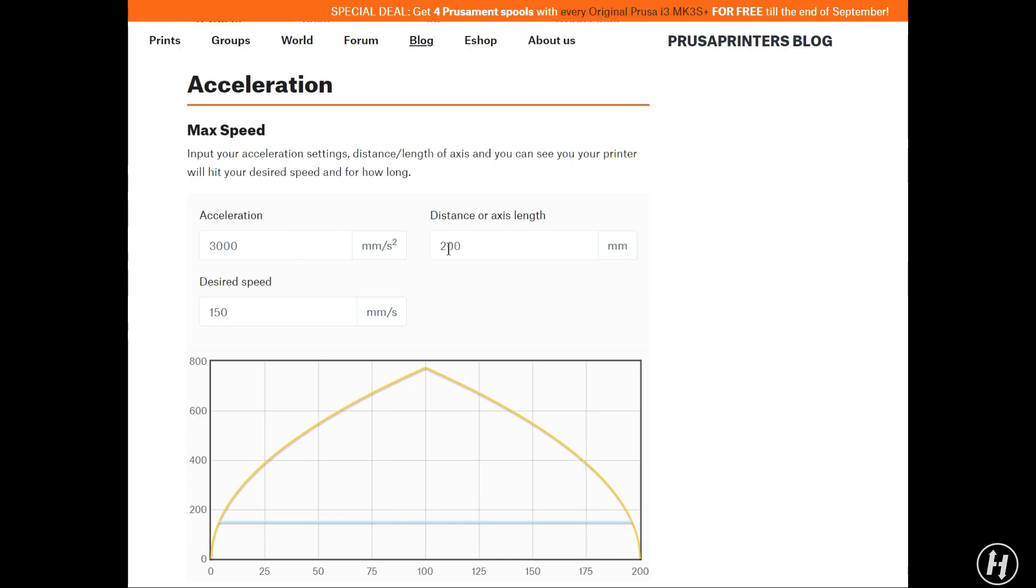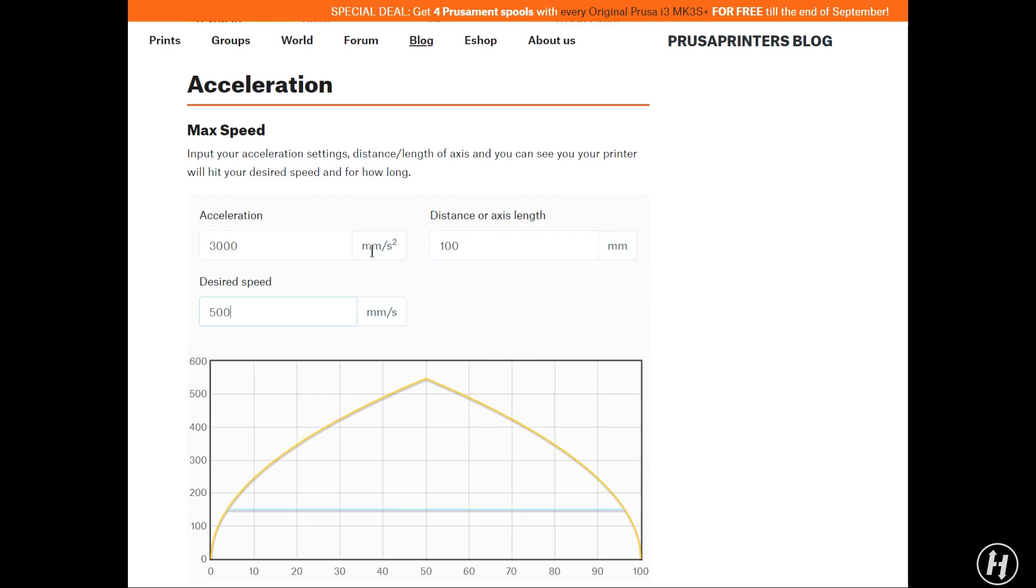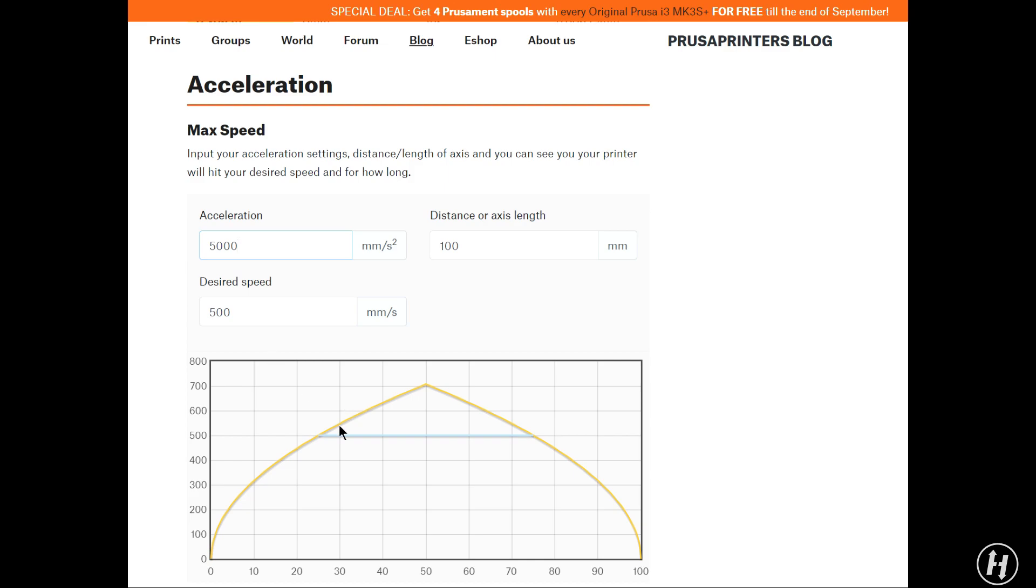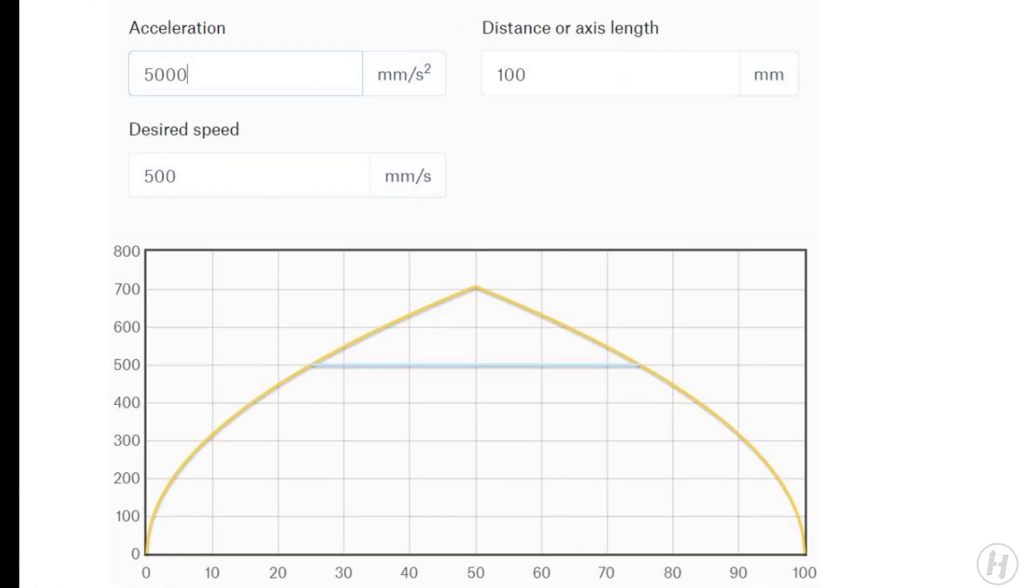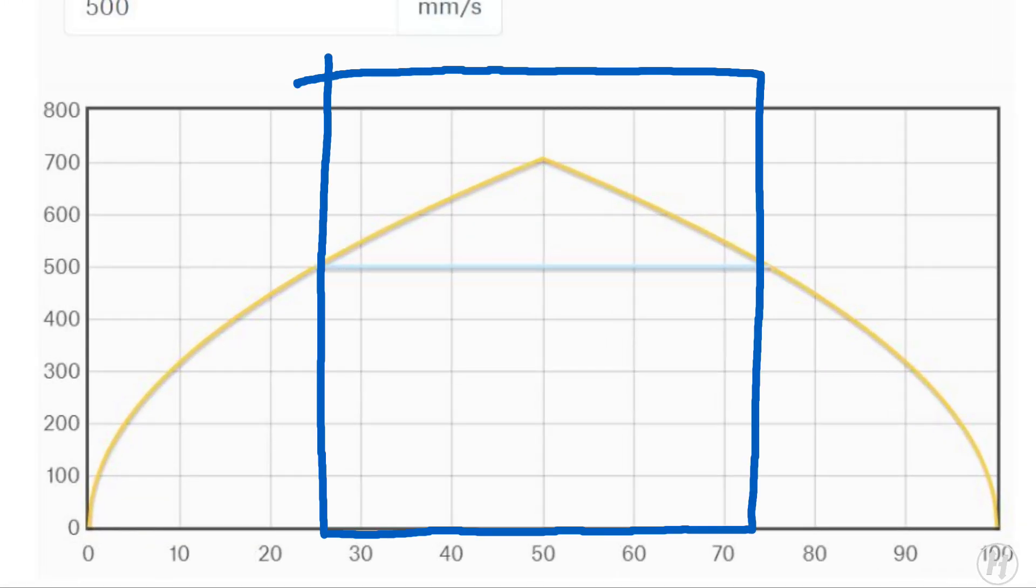As you can see in this example, if I request a print move of 100mm long to be done at a speed of 300mm per second, and I apply an acceleration of 5000mm per second squared, the printhead will reach the requested speed for only half of the entire move. The other half of the time, the printhead will be ramping up in speed or slowing down.